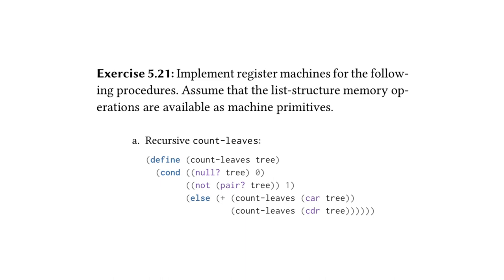This takes us to our next and final exercise, exercise 5.21, which asks us to implement register machines for the following procedures, assuming list structure memory operations are available as machine primitives. We're only going to do question a: implement a register machine for a recursive count-leaves procedure. This procedure takes a tree — a list or nested list — and counts the number of leaves, which are the values in the nested list. When at a null tree it returns zero; when not at a pair it returns one (that's when we've hit a leaf); otherwise it recurses down the left and right sides using car and cdr.